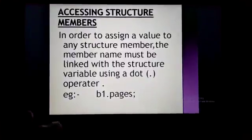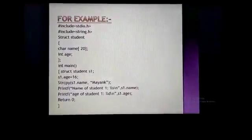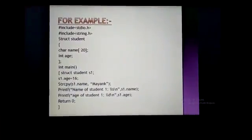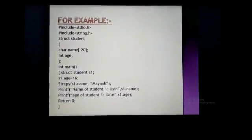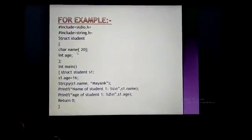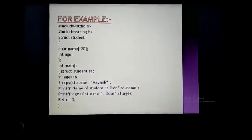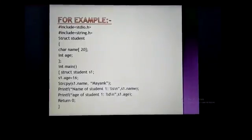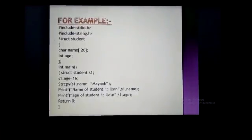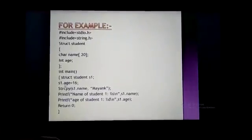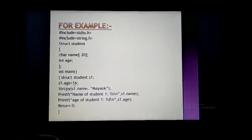Let's see another example. In this example, structure name is student and character name int age is our statement. S1 is a variable of student type and age is a member of student. We give the age of the student is 16.